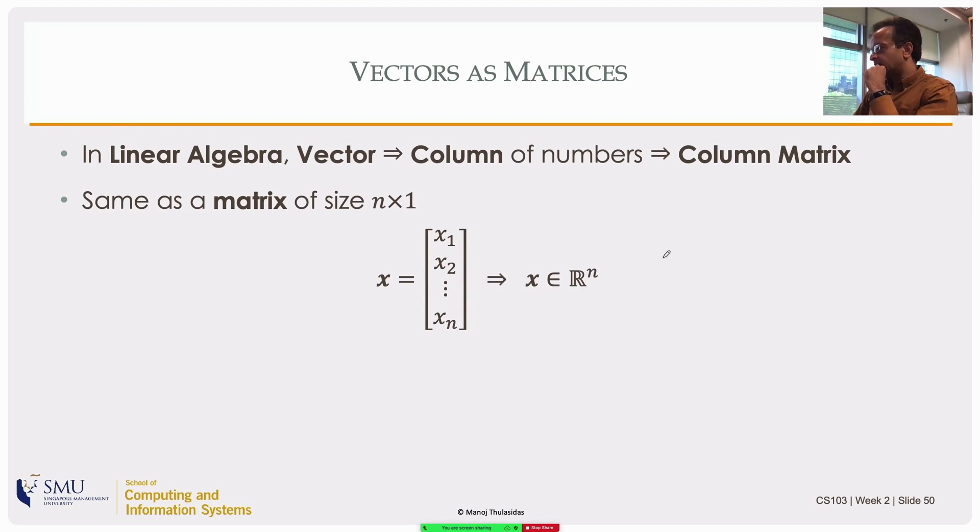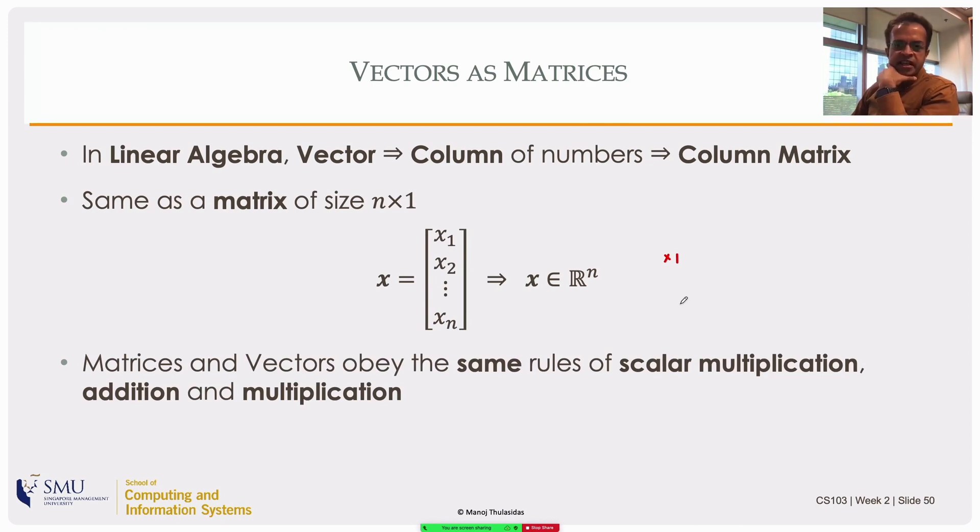We write it as R^n. We never write R^n by 1, the 1 is understood. So an n-dimensional vector is actually a matrix of n rows and one column.